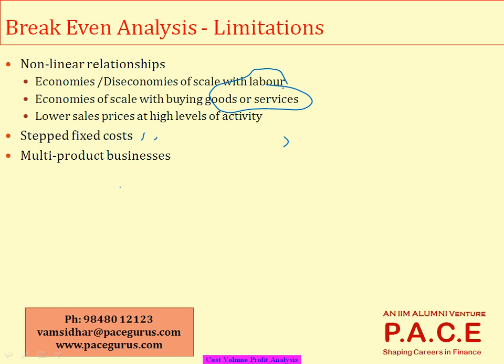There is also the possibility of stepped-up fixed costs. Initially, up to selling 100 units, your current premises or factory location may be sufficient. But if demand grows and you need to sell 200 units, you have to increase capacity, which means increased investment in fixed costs. In that case, direct break-even analysis may not be fully applicable and a more detailed analysis is required.